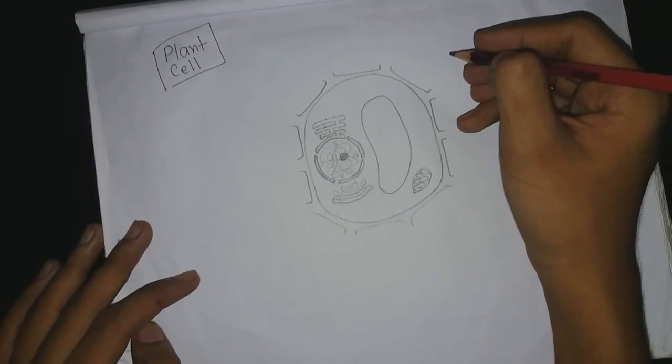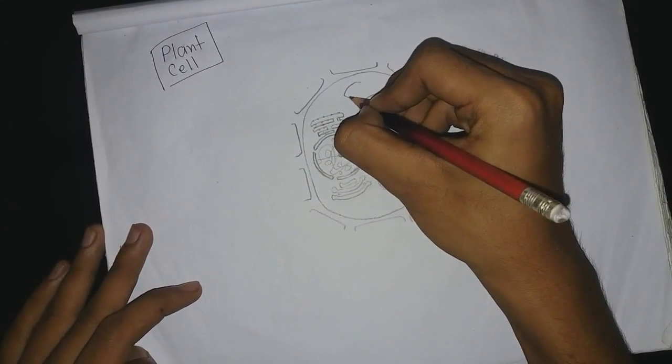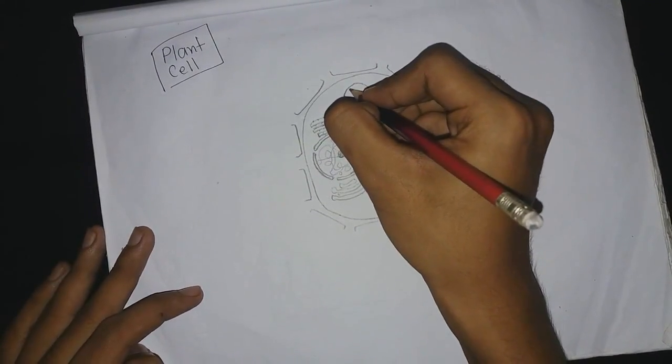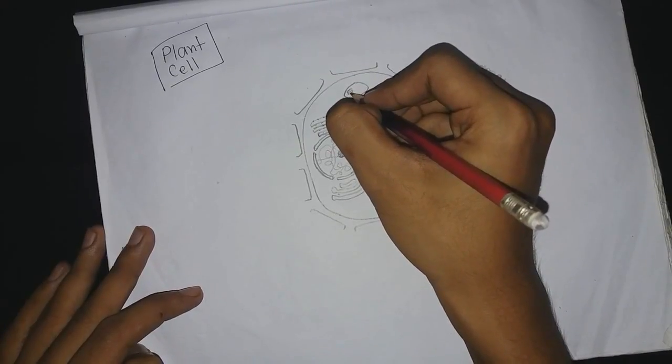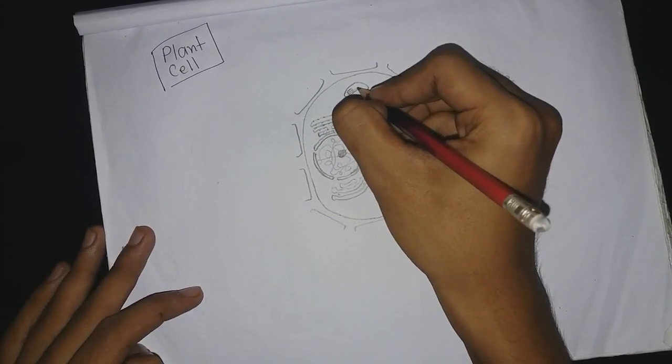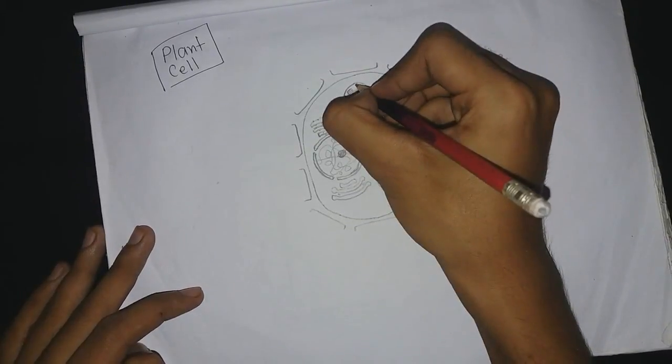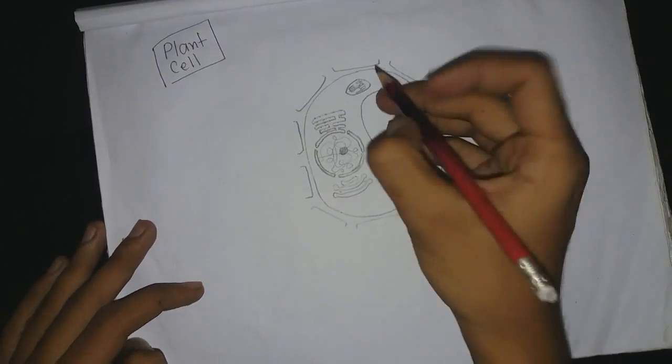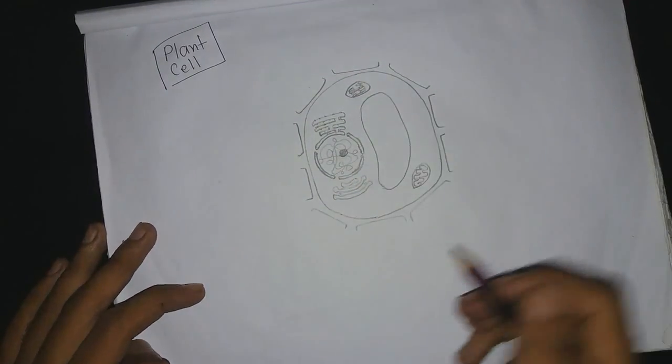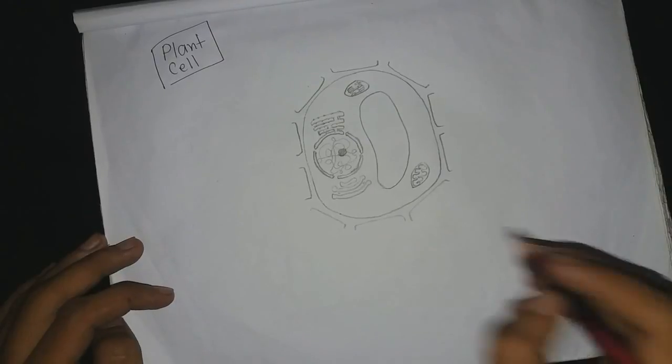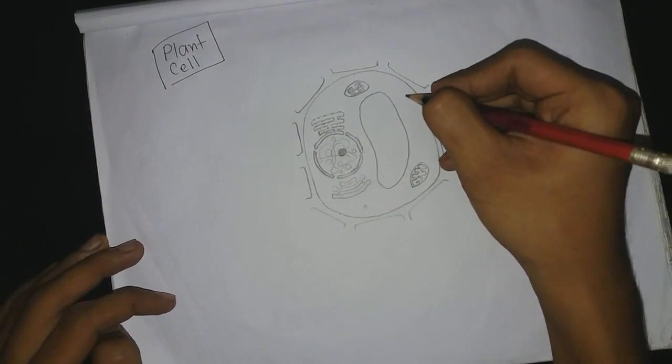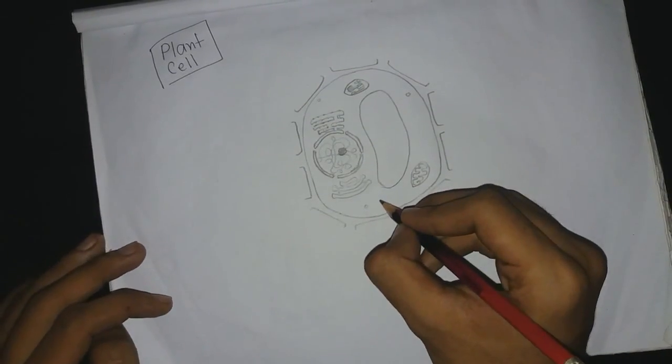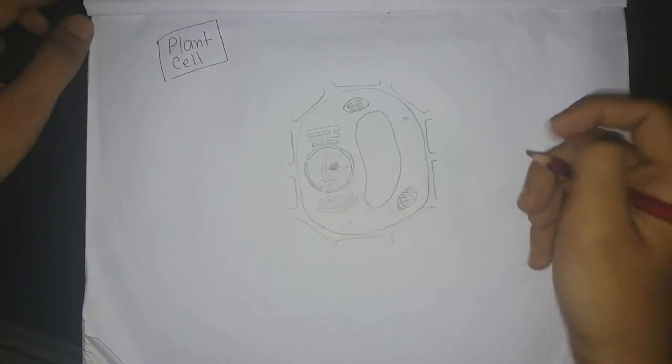Now let me draw the chloroplast which is the unique characteristic of the plant. I will give the cristae like this, very small things, here too. I think it's enough. So I've also drawn the chloroplast. Then let me give some pores here and here.